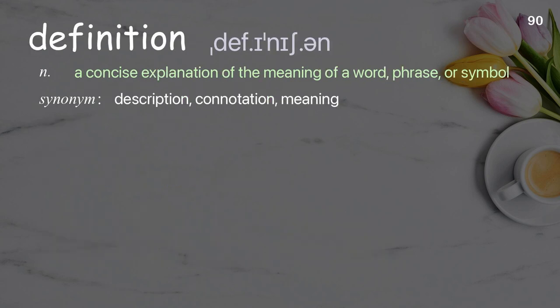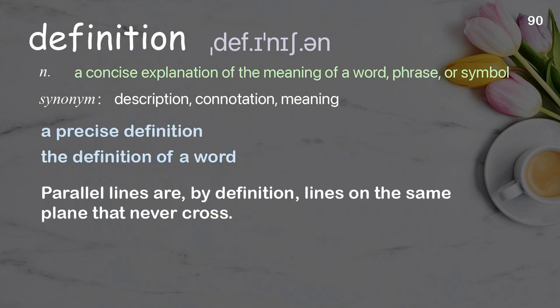Definition: a concise explanation of the meaning of a word, phrase, or symbol. Examples: a precise definition, the definition of a word. Parallel lines are, by definition, lines on the same plane that never cross.